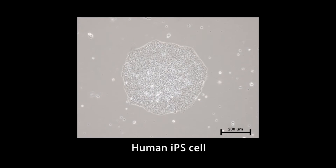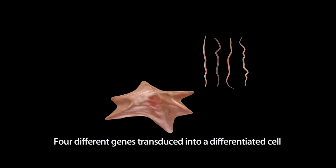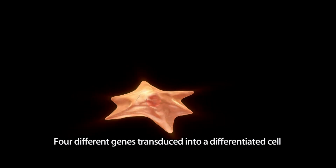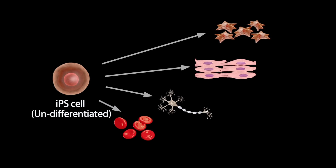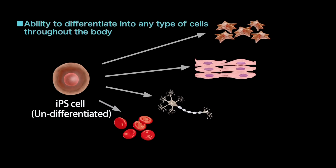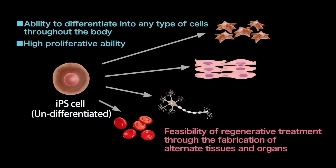However, this conventional wisdom has been fully overtaken by IPS cell technology. Transducing just four genes into differentiated cells made it possible to return them to the undifferentiated stage. As IPS cells have the ability to differentiate into any type of cells throughout the body and also have a high proliferative ability, it is now possible to realise regenerative treatment through the fabrication of alternate tissues and organs.